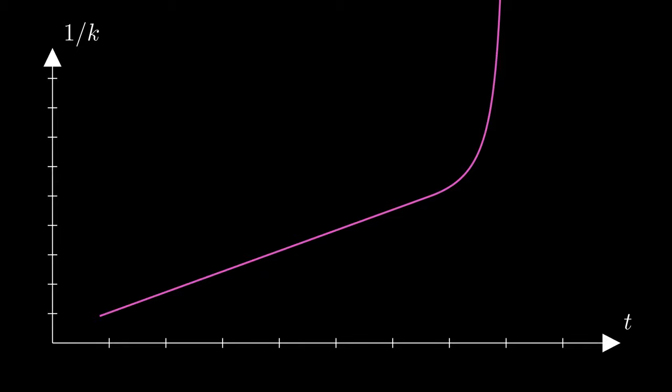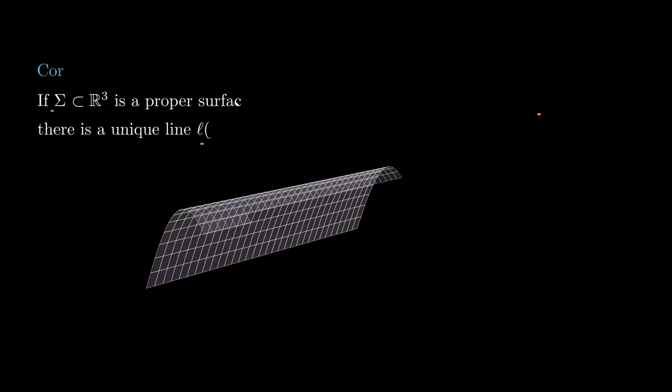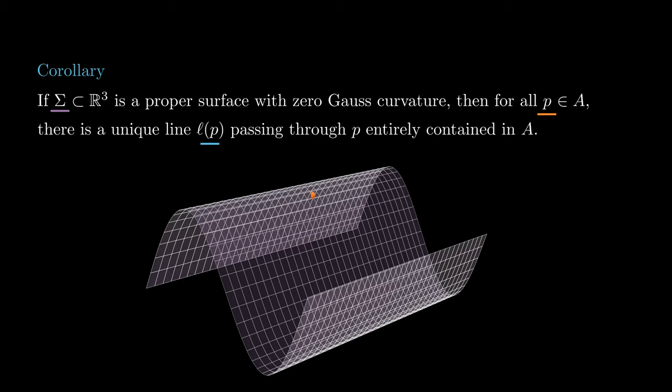I'll say that again because it is a very unique argument. 1 over k changes linearly with respect to t. This means this quantity cannot just suddenly blow up to infinity nor minus infinity, which is exactly what would happen if k approaches zero. So what we have shown is that for each p in A, there is an entire line L of p passing through p and fully contained in A. Also by the first lemma, this line is unique.